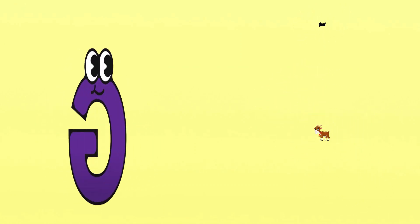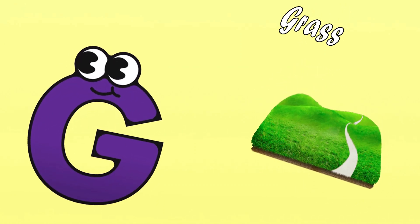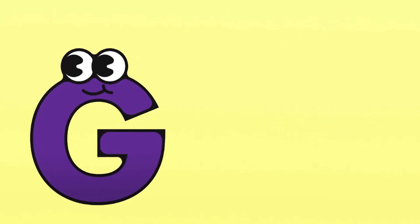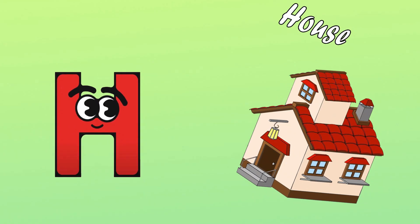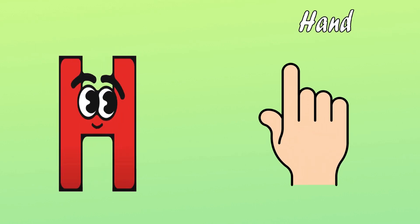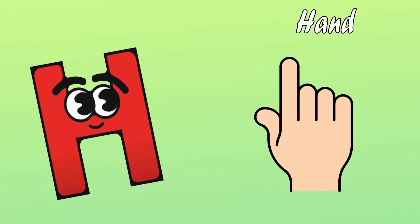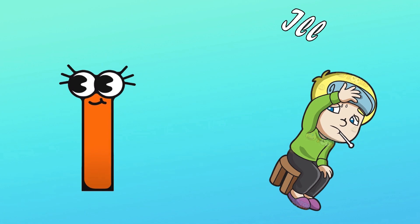G is for Grass. G, G, Grass. H is for House. H, H, House. H is for Hand. H, H, Hand. I is for Eel. E, E, Eel.